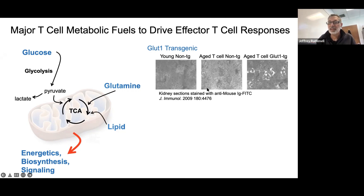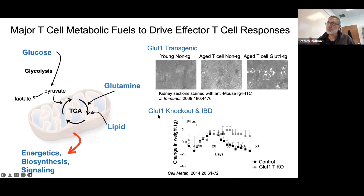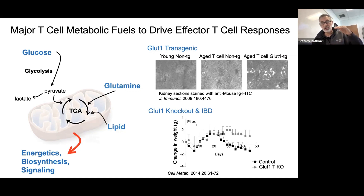Conversely, knocking out GLUT1 reduces glucose uptake by about 50% — cells can still take up glucose, just more slowly. In an inflammatory bowel disease model, mice with T-cell-selective GLUT1 deficiency don't lose weight to the same extent as controls. So titrating the degree of glucose uptake is important to tune inflammatory levels: more glucose, more glycolysis, more inflammation. You can also use 2-deoxyglucose, a pharmacologic glycolysis inhibitor, to explore these relationships.